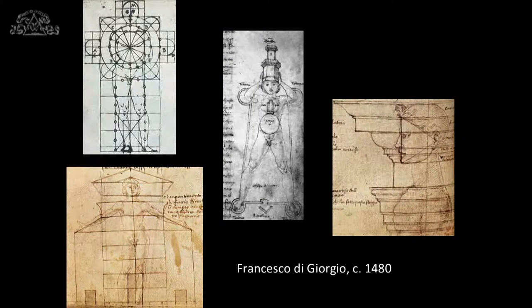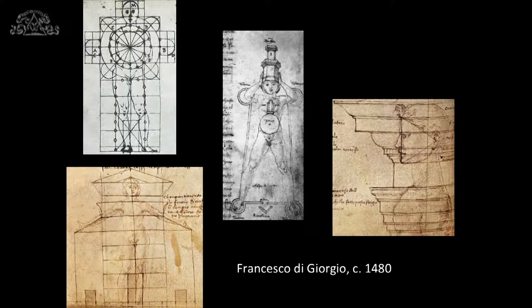In the treatise of Francesco di Giorgio, completed around 1480, ideas and images appear that posit the most literal correspondences between building and body. On the left, the body formats both the plan and cross-section of a church. In the middle, it gives meaningful shape to a fortress. While on the right, the proportions of the profiles of an entablature are made to correspond literally to the profiles of a human head and body—images which are familiar to most of you.